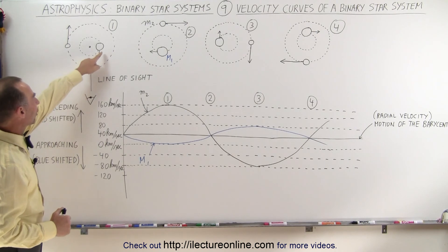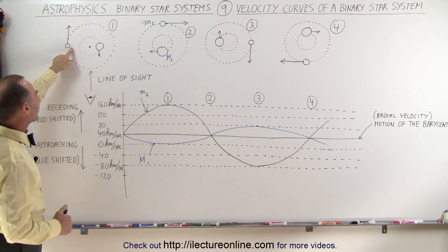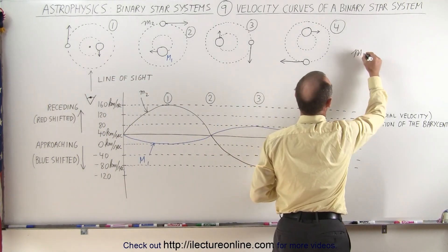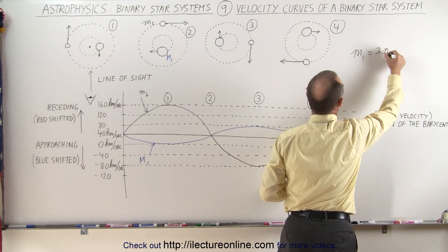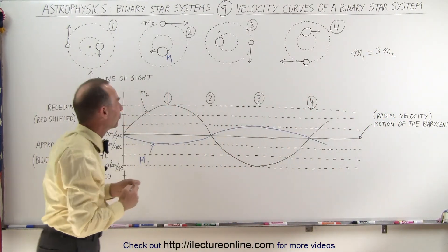Again, we have a larger object, let's call that M1, and a smaller object, let's call that M2. And again, let's take the assumption that M1 is 3 times M2. In other words, the mass of M1 is 3 times the mass of M2.